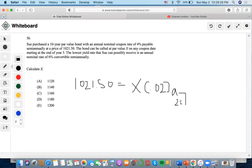20 periods (10 years times 2), 6% semi means 3% per period, plus X times V to the 20.